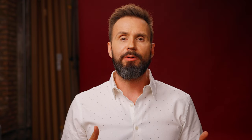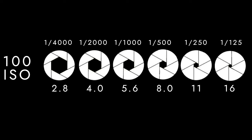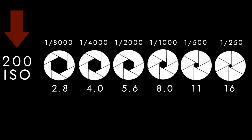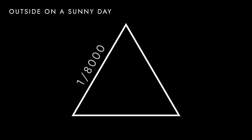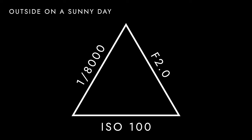Let's say we need to shoot at 1/8000th of a second at f/2.8 — maybe we want to freeze motion outdoors or get a blurry background when shooting a model's headshot. Whenever you have a correct exposure, your exposure triangle is in balance. And when you change one of the sides, you have to change one of the other sides to remain in balance. So if we have our shutter speed at 1/8000th of a second and our aperture at f/2, our ISO needs to be at 100. If our aperture has to go to f/2.8, then our ISO needs to go to 200.